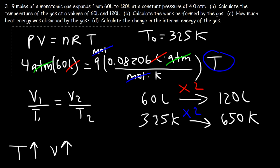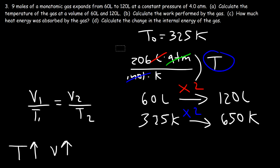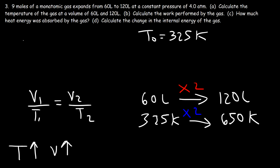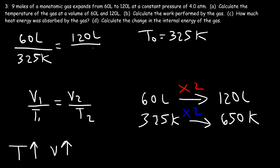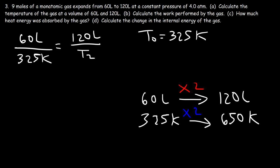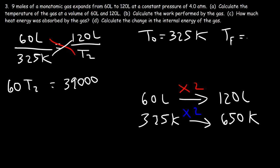Plugging into Charles' law: V₁ = 60 liters at T₁ = 325 Kelvin, V₂ = 120 liters, solve for T₂. Cross-multiplying: 60 × T₂ = 120 × 325 = 39,000, so T₂ = 39,000 ÷ 60 = 650 Kelvin. This confirms the same answer.